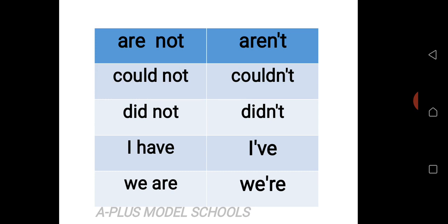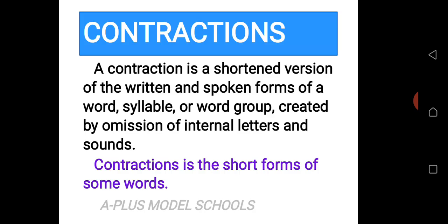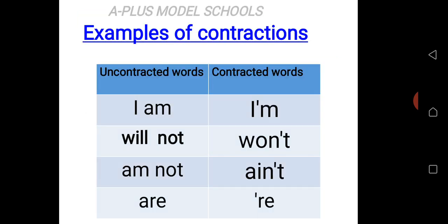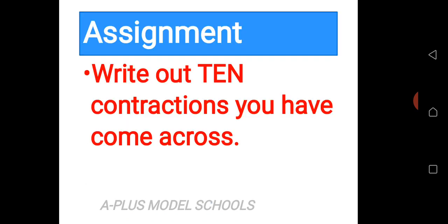So in a nutshell, contractions is the short form of some words. And you must take note that contractions are formed with the omission of some letters. So you are going to be doing this for me. I am going to have you write out ten contractions you have come across, because you have a lot of words which you can contract. So you write out ten which you have come across yourself. Do you understand?